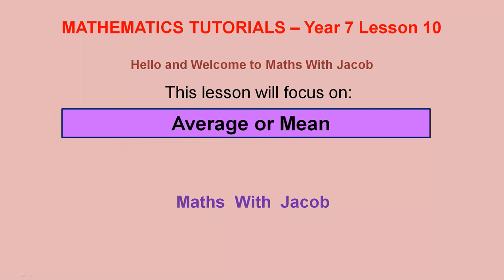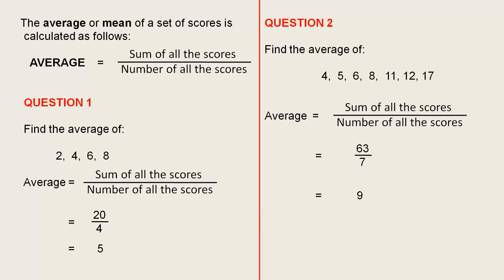Hello and welcome to Maths with Jacob. This lesson will focus on average or mean. The average or mean of a set of scores is calculated as follows: the average equals the sum of all the scores over the number of all the scores. Now remember for this video we can refer to it as the average or the mean.